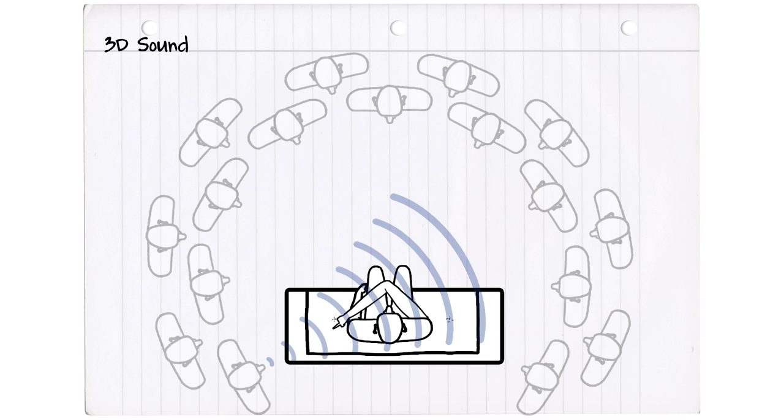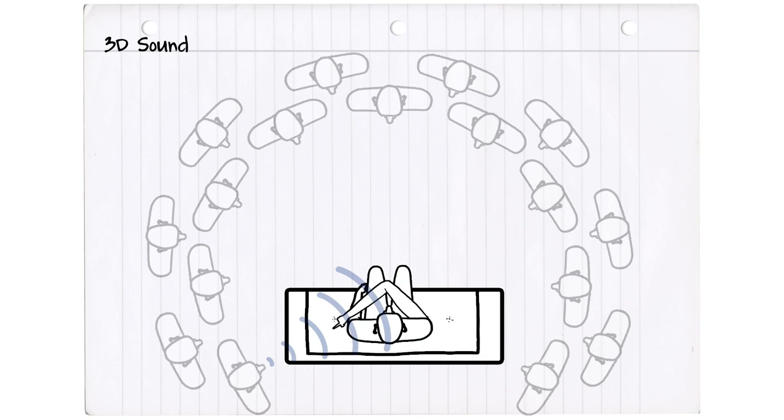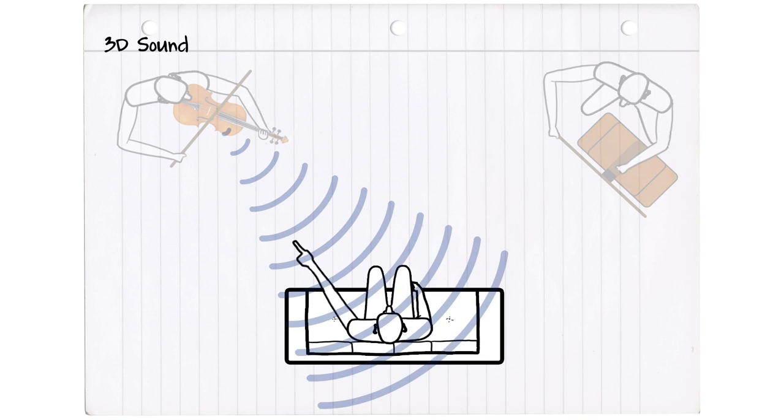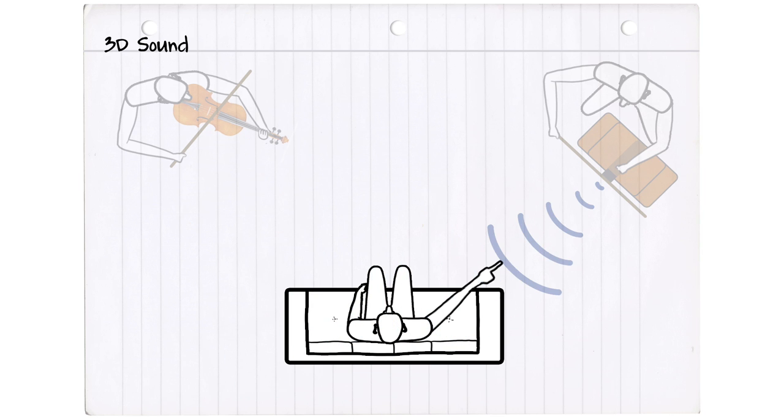If you have a choir, you can point to every person in the choir. If you have a symphony orchestra, you can see the viola coming from here, the bass coming all the way from the right. In other words, a 3D audio image of that event.